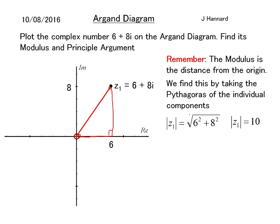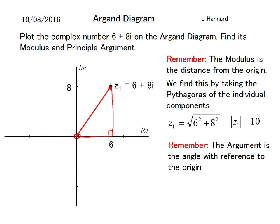So the modulus of z₁ is 10. The argument is the angle with reference to the origin — we always start pointing right and tilt up to the point. Using standard trigonometry, arg(z₁) is the arctan of 8 over 6, which gives 0.927 radians. Remember we are working in radians at this level. You can also convert degrees to radians by dividing by 180 and multiplying by π, if you don't feel comfortable working directly in radians.